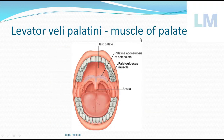In the roof of the oral cavity there is a bony structure called the hard palate, covered by mucous membrane. Just posterior to that is a fibromuscular curtain hanging freely at the junction between the nasopharynx and oropharynx — this is called the soft palate. The soft palate has a conical projection in the midline called the uvula.